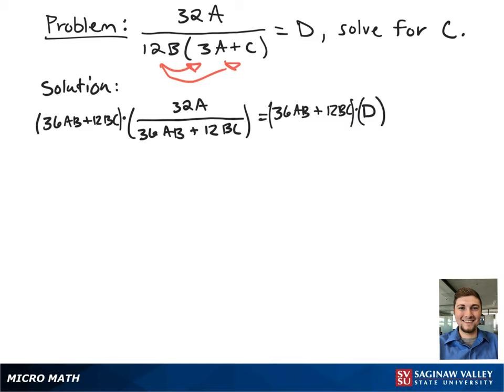After we've done this, we can rewrite our new formula underneath as 32A equals 36ABD plus 12BCD.